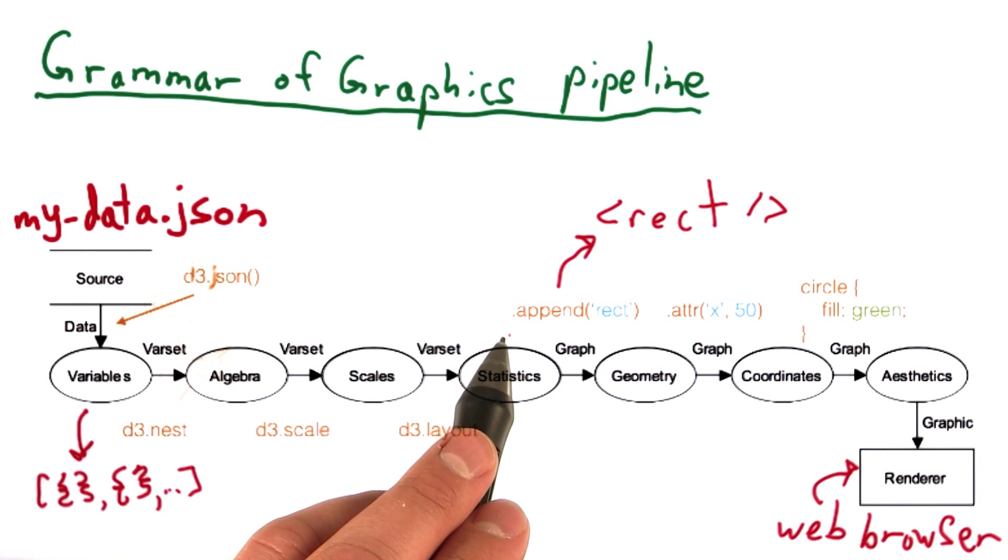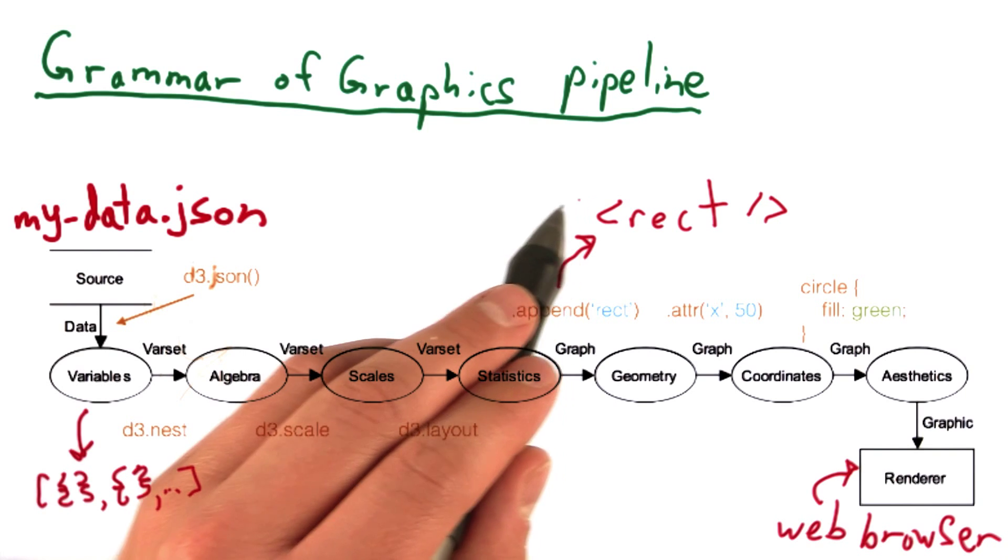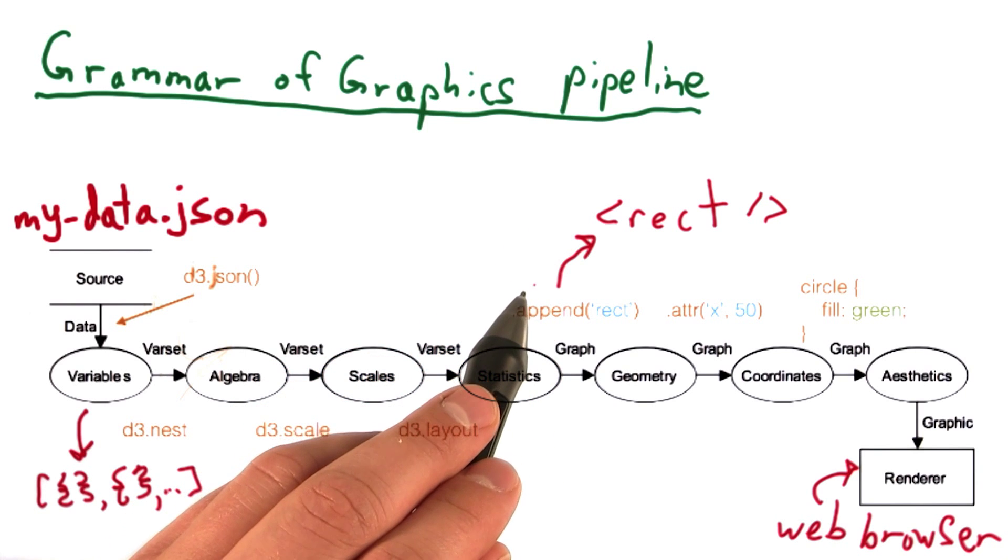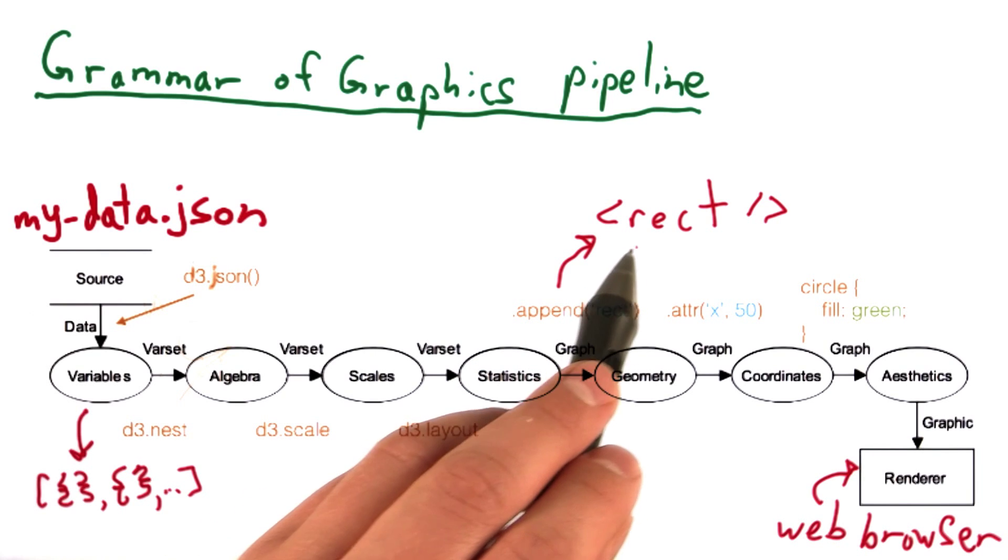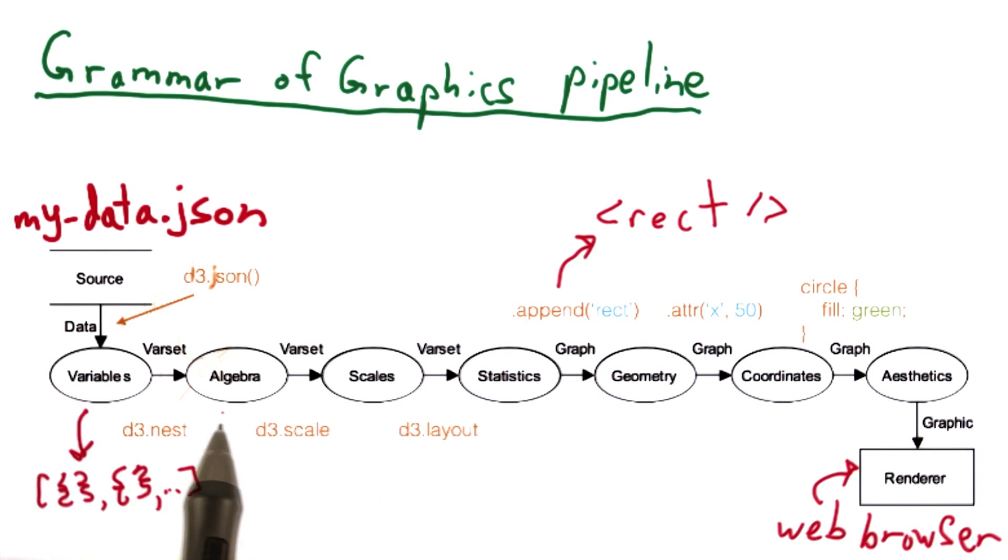.append in D3 is what actually inserts our SVG or HTML elements, which we've already seen. In this case, .append rect puts rectangle SVG elements for every data point.